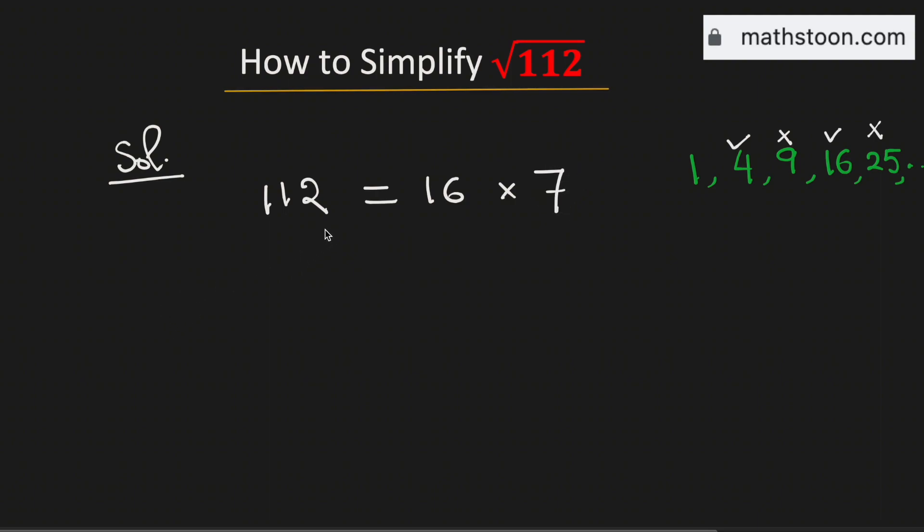Now taking square root on both sides we get square root of 112 is equal to square root of 16 times 7.